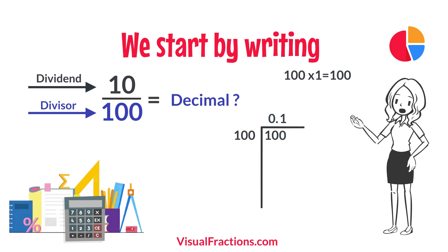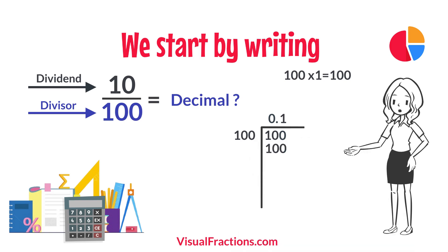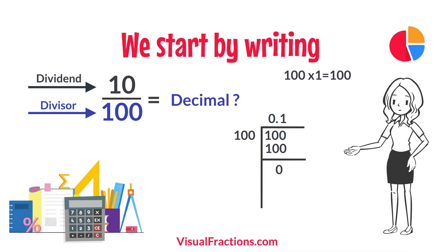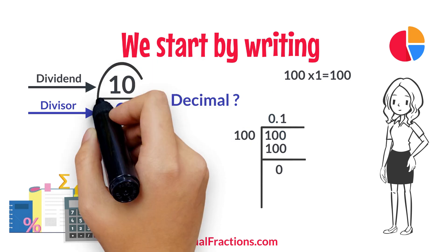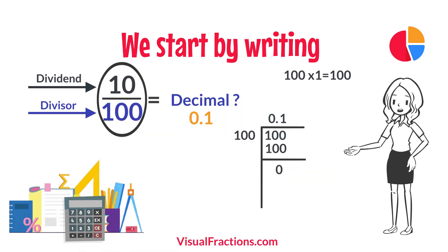Multiplying 1 by 100 gives us 100. When we subtract 100 from 100, we get a remainder of 0. So there we have it — the fraction 10 one-hundredths converted to a decimal is 0.1.